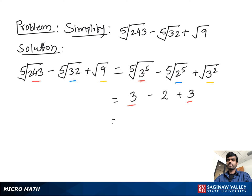Then we add 3 and 3, then subtract 2. So 3 plus 3 is 6, minus 2. 6 minus 2 gives us 4, so our answer is 4.